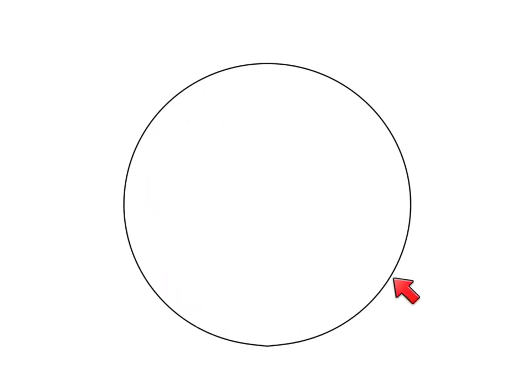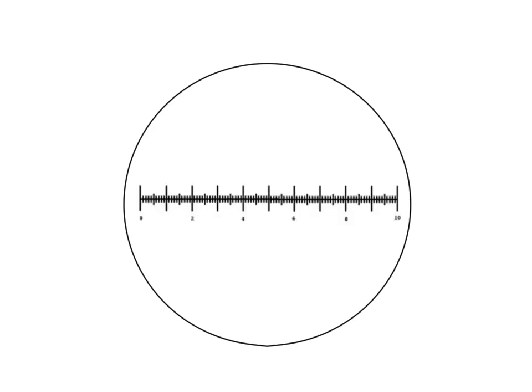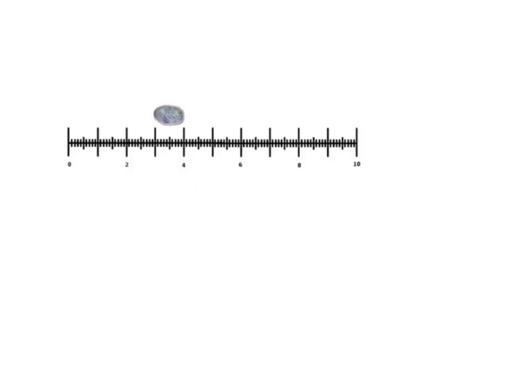If you look down a microscope, here we can see the field of view, and if you have an eyepiece graticule it looks like this. An eyepiece graticule is basically a scale which is built into the eyepiece itself, and we can use this scale to help us measure things. So if we put an object on the stage, here we're looking at a cell, and you can see the eyepiece graticule scale. We can see that our object is one unit in length, but at the moment we don't know what that unit is measured in, so we need to find out.